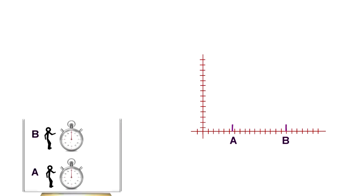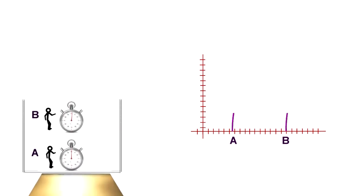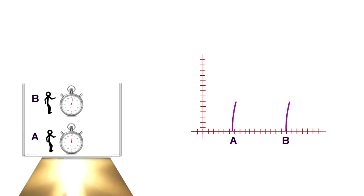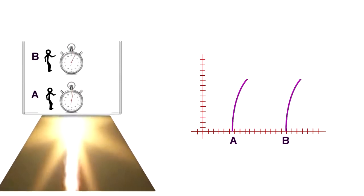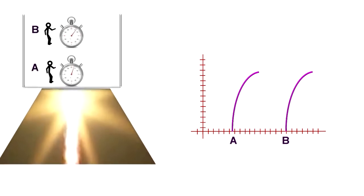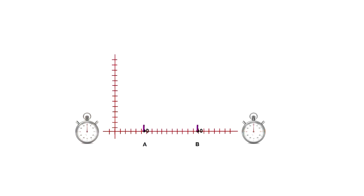As the elevator accelerates, the world lines on the spacetime graph are not straight lines. They curve outwards because their velocity increases with every second. Here we have clocks that measure the proper time elapsed along each person's world line. They mark the time in their own reference frame.